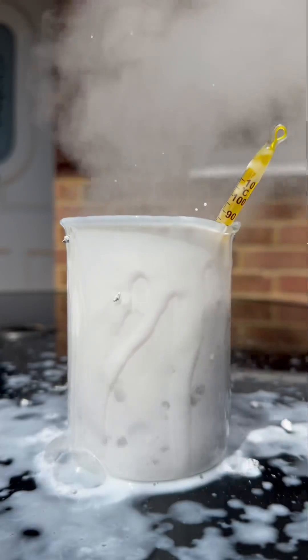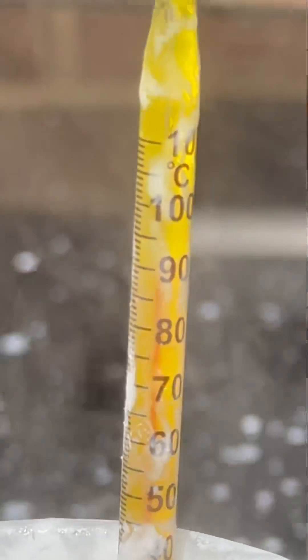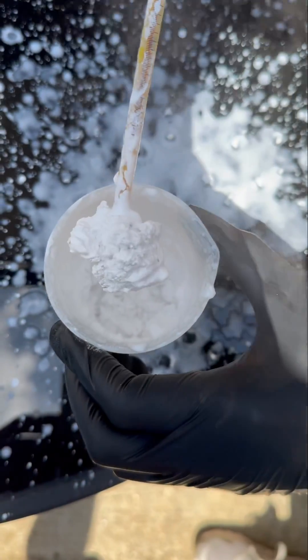So that's hydrogen gas. Look at the temperature - 100 degrees bruv. Bare hot in that. So all that white stuff, that's calcium hydroxide. That's an alkaline thing like sodium hydroxide and potassium hydroxide.